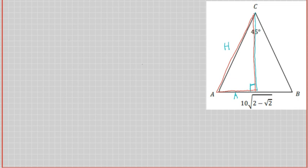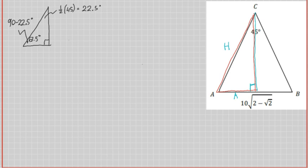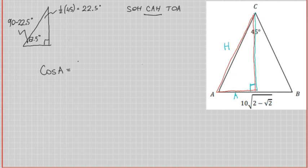Drawing a representative triangle: the angle at the top is halved by the bisector, so each half is 22.5 degrees. The remaining angle at the base of the right triangle is 90 - 22.5 = 67.5 degrees. Since we're using the adjacent and hypotenuse sides, we choose cosine — using SOH CAH TOA.